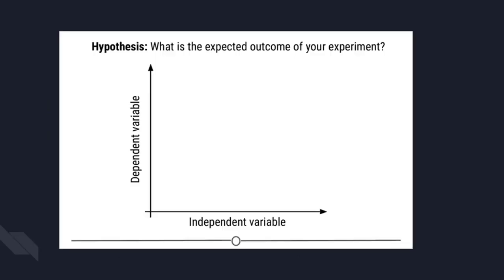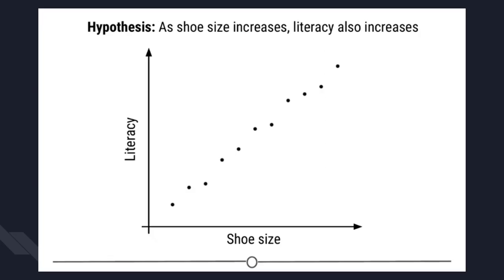When designing an experiment you have to decide what variables you will measure and which you will manipulate to affect changes in other measured variables. Additionally, you must develop your hypothesis — essentially an educated guess as to the relationship between your variables and the outcome of your experiment.